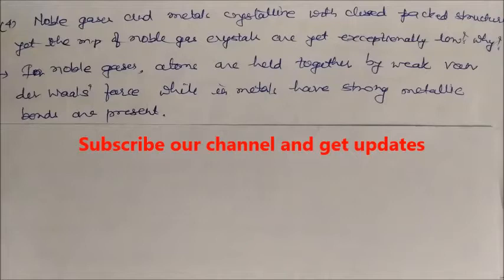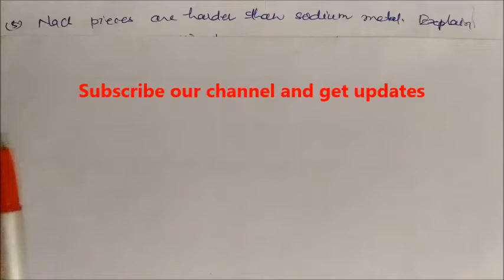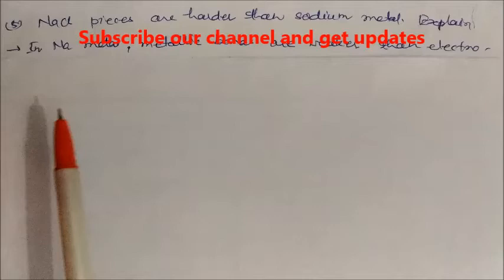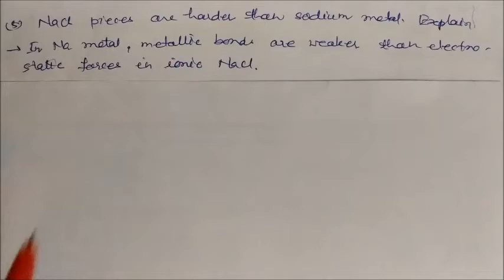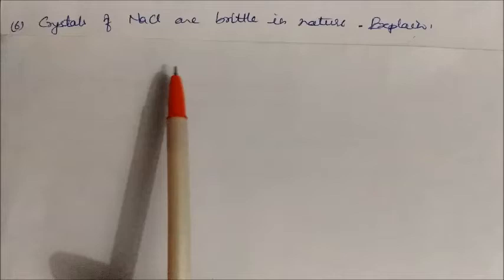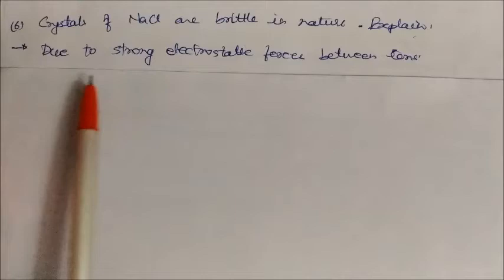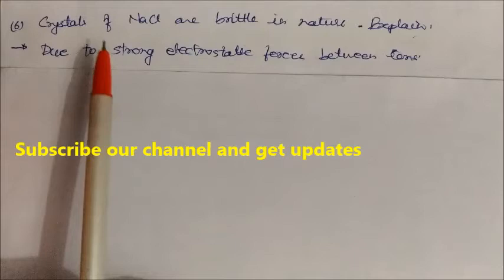NaCl pieces are harder than sodium metal. Explain. Because in sodium metal, metallic bonds are weaker than the electrostatic forces present in NaCl. In NaCl we have strong electrostatic forces, while in sodium metal we have metallic bonds. Additionally, crystals of sodium chloride are brittle in nature because NaCl has strong electrostatic forces of attraction between its ions — that's why ionic compound crystals are brittle.